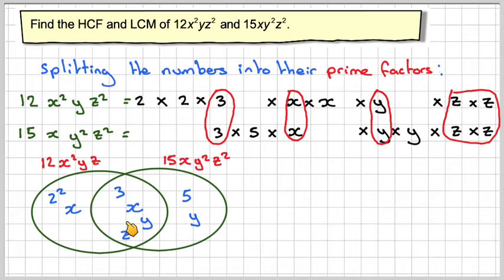So the HCF is given by the intersection on the Venn diagram. The HCF will be 3xyz². That's straightforward.